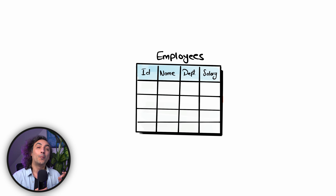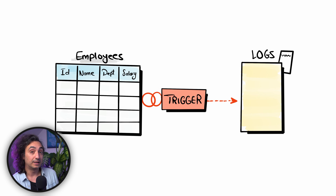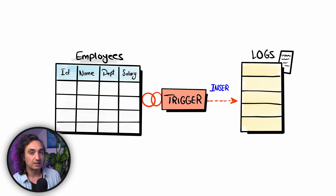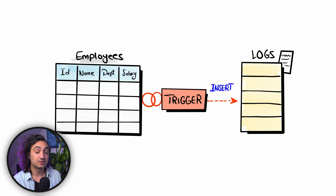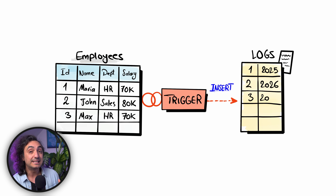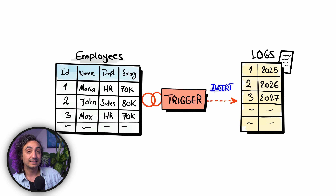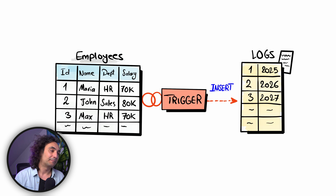In order to maintain logs we can use the power of triggers. We're going to attach a trigger on the employees table, and each time we insert a new record, another event is triggered — the new employee gets inserted into the audit logs to have a record of this activity. That means each time you insert data to the employees table, you are automatically inserting data into the logs. This is a really amazing use case for triggers.